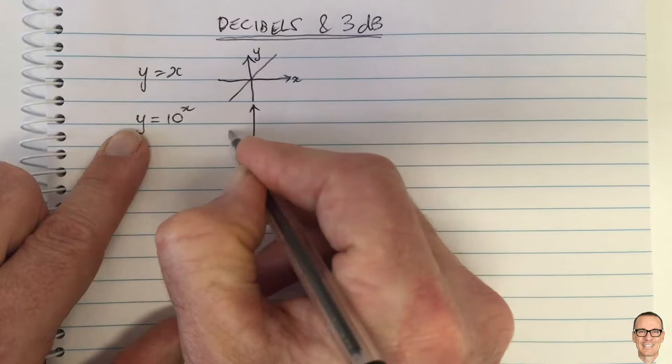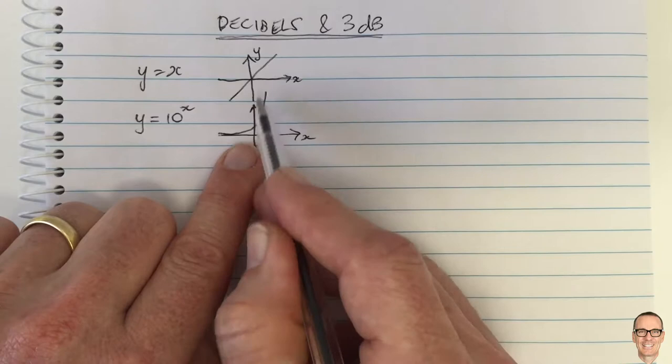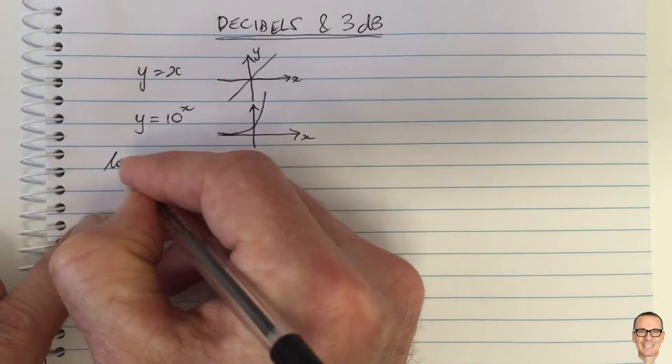If we plot this then you get a function on the Y which goes up very quickly and you're quickly off the scale of your plot. So it's hard to plot that and get any meaningful information from it.